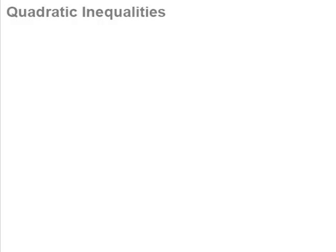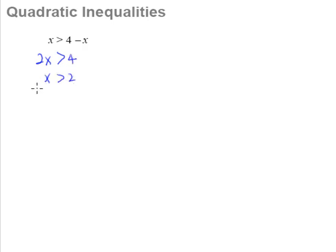We have now come to this section on quadratic inequalities. I'm sure you can solve a basic inequality question like this: simply bring the negative x over to the left-hand side, it becomes a plus, so you have 2x greater than 4, and therefore x would be greater than 2. This kind of linear inequality shouldn't be too much of a headache for you.